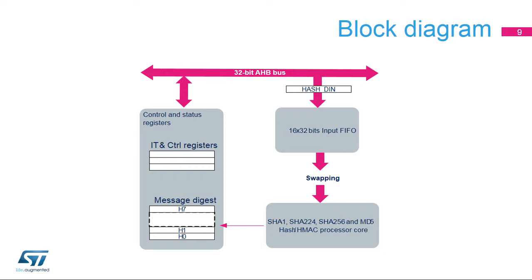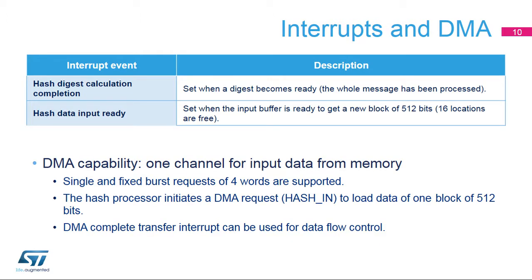This simplified block diagram of the hash processor shows the basic data flow and control modules. The hash processor processes 512-bit data blocks and generates digests of up to 256 bits, depending on the algorithm. Input data may be swapped before entering the core unit, where they will be processed to generate a simple hash or a Message Authentication Code, or MAC. An interrupt in the Nested Vectored Interrupt Controller, or NVIC, is triggered when a hash digest has been successfully calculated, or when the hash processor is ready to accept a new block of data.